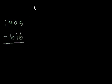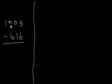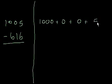Let's say I have the subtraction problem 1,005 minus 616. What I'm going to do is write the same problem in a slightly different way. We could call this the expanded form. 1,005, what I'm going to do is separate the digits out into their respective places. So that is equal to 1,000 plus 0 hundreds plus 0 tens plus 5. 1,005 is just 1,000 plus 0 plus 0 plus 5.